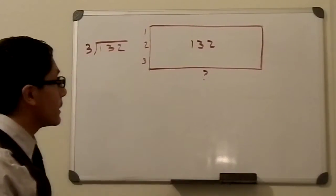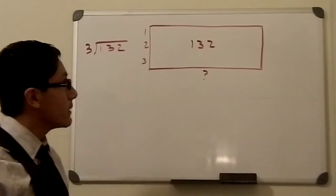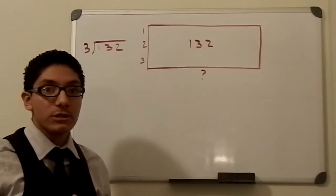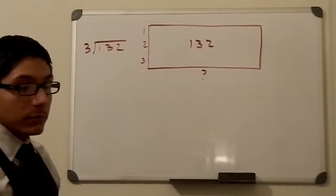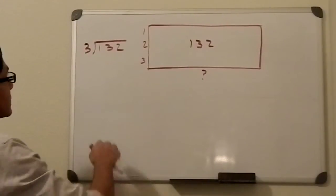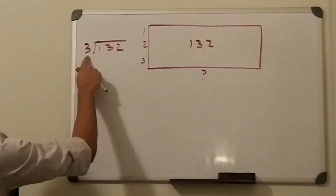All right, welcome back. In this video I'm going to be talking about the algorithm for division, also known as long division. The algorithm goes like this: if we have 132 and you want to divide it by 3, then we look at the first number.